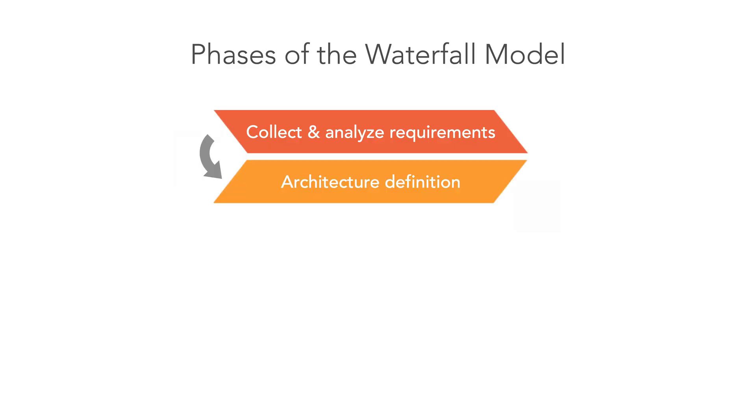After collecting and analyzing the requirements, we can proceed to the next phase. Here's where we define the overall design of our software. Defining the architecture is like creating the blueprint for a building. Thus, the design should be as clear and detailed as possible. The team should be able to implement the product based on this plan.